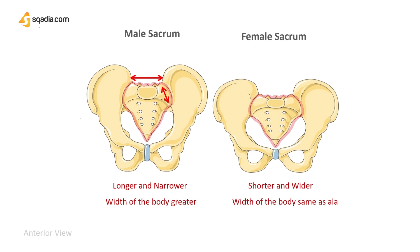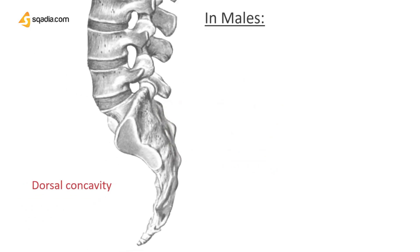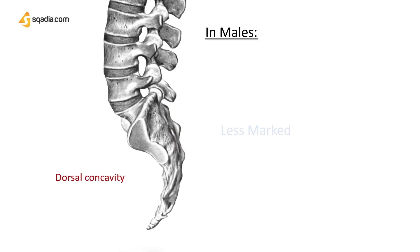The dorsal concavity of the auricular surface is less marked in the male. The concavity on the ventral aspect is more uniform and shallower in males. In females, the concavity is irregular, being most marked between the first and the second sacral segment.